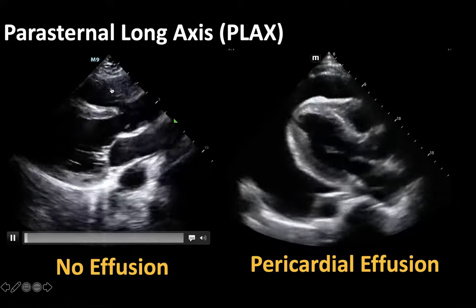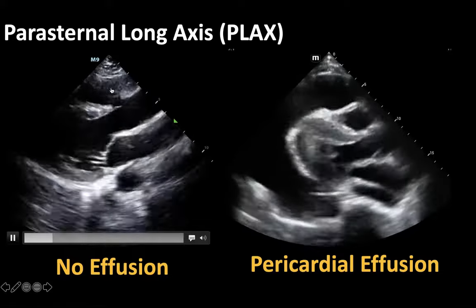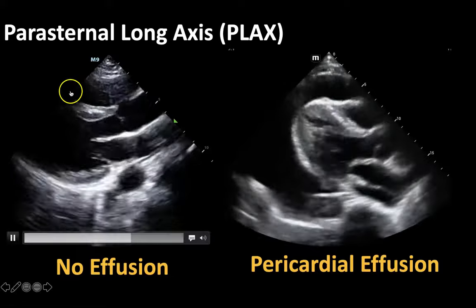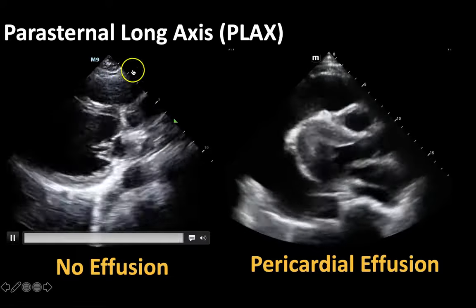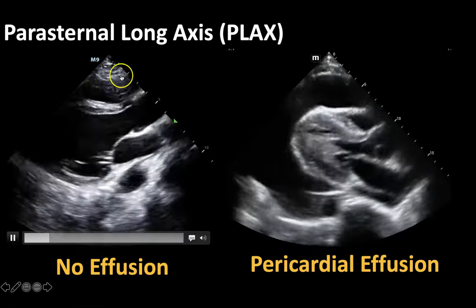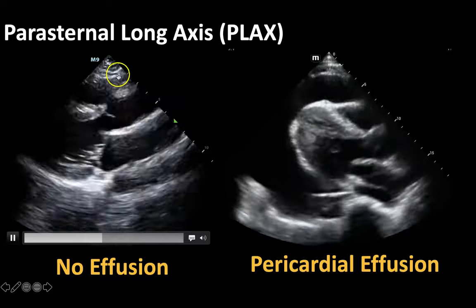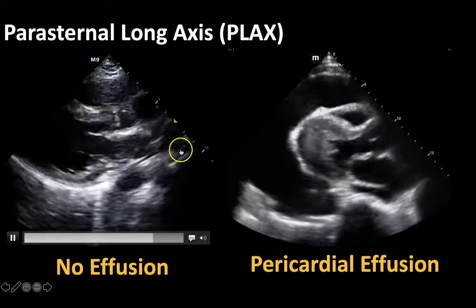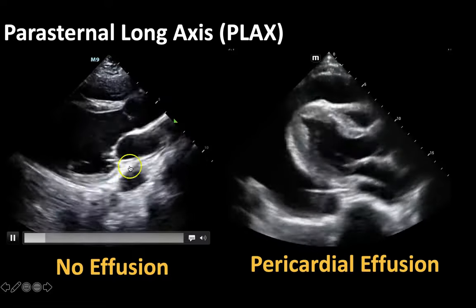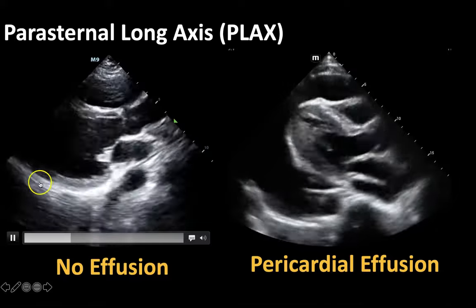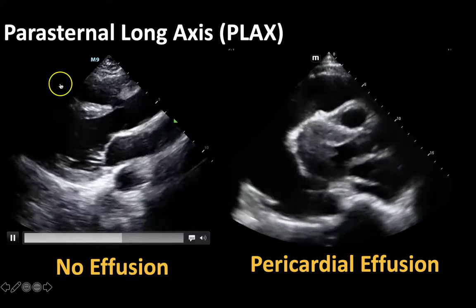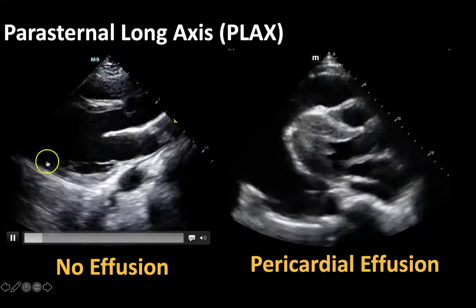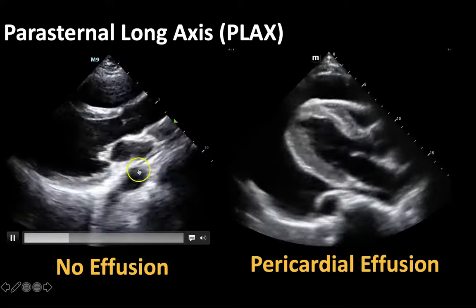We look anteriorly here for any black stripes, and then we look posteriorly — if there's any sort of circumferential effusion, we would see it back here. We don't see fluid in either space here, so this heart on the left side of the screen does not have a pericardial effusion.